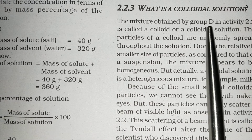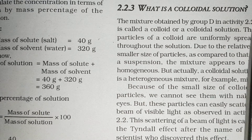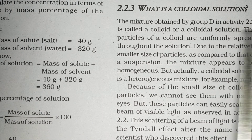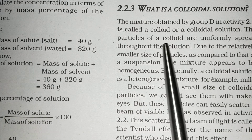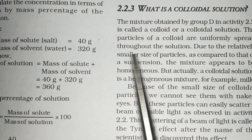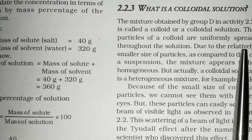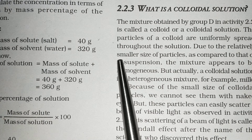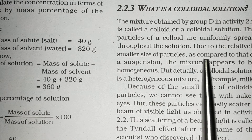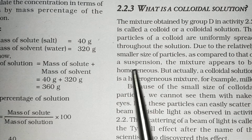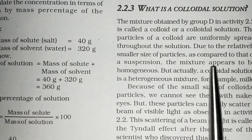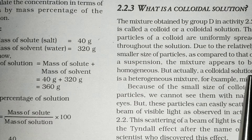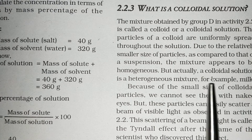The mixture obtained by group D in activity 2.2 is called a colloid or a colloidal solution. The particles of a colloid are uniformly spread throughout the solution. Due to the smaller size of particles as compared to that of the suspension, the mixture appears to be homogeneous. But actually, a colloidal solution is a heterogeneous mixture.